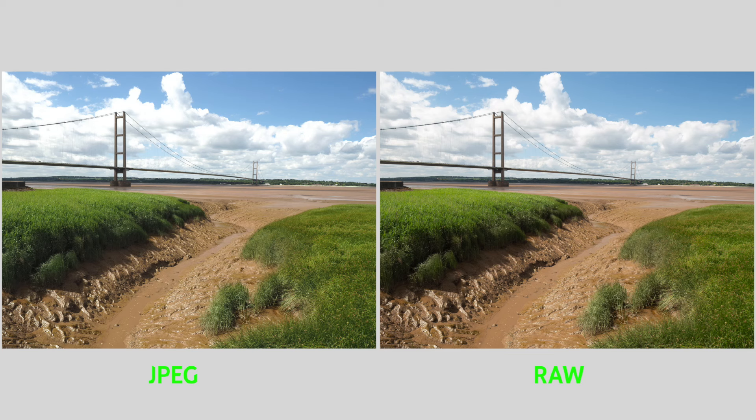Now these two images are not in fact separate images — they're actually the same image taken at the same time. The image on the left is the JPEG file and the image on the right is the RAW file. Both were taken with the low ISO on my Olympus E-M1 Mark II at ISO 100. The base ISO on this camera is 200, so I expanded it down by a stop just to see what would happen.